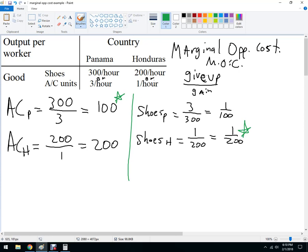So here's what should happen. Honduras should specialize in shoes even though they're actually not more productive at it. They don't have an absolute advantage. They're not better at it. And then Panama should specialize in AC units because they're much more productive and they have the comparative advantage. They give up the least when they go ahead and produce it.